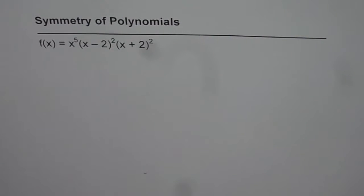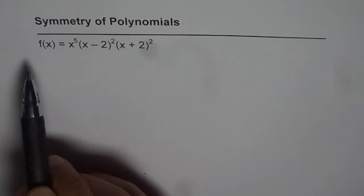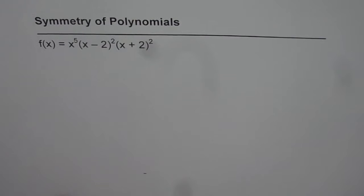Here is an example to check the symmetry of the polynomial. The function given to us is f(x) = x^5(x - 2)^2(x + 2)^2.